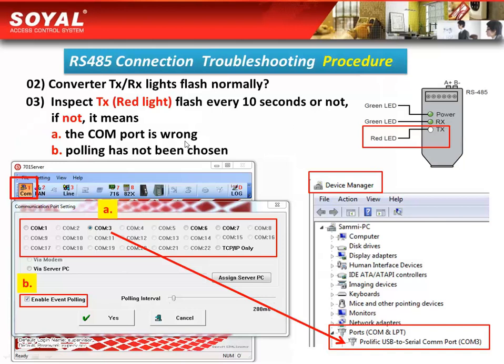Next, inspect whether the TX red light flashes every 10 seconds. If not, there are two possible reasons: first, the COM port is wrong — you can use Device Manager to confirm your COM ports. The second possible reason is that event polling has not been enabled. Remember, the event polling must be selected.